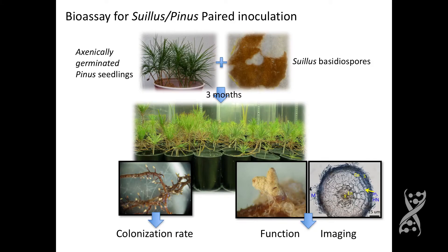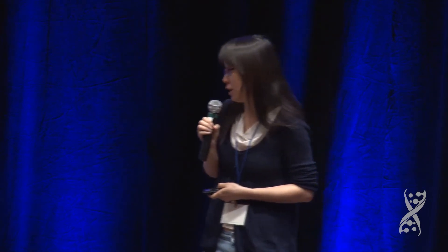To answer those questions, in our initial studies we used pairwise bioassays — inoculating species of Suillus with species of Pinus, cross-inoculating several species of pine with several species of Suillus — and placed them into phytotrons to look at their colonization rates to define compatibilities. We used RNA-seq, metatranscriptomics, and meta-omic studies to define their functions, and imaging systems to capture morphological changes in terms of defining functions and symbiotic efficiency.